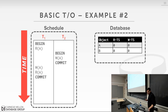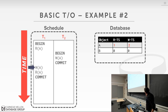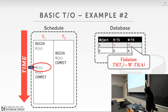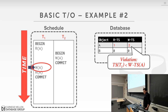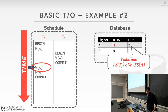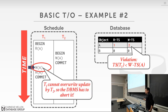An example where a transaction aborts: T1 reads A, updating A's read timestamp to 1. T2 writes A, updating the write timestamp to 2. Now T1 tries to write A, but T1's timestamp (1) is less than A's write timestamp (2), so T1 is not allowed to make this modification. This violates the timestamp ordering conditionals, so T1 must abort.